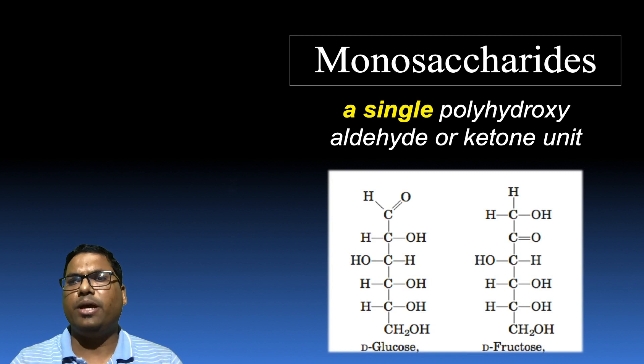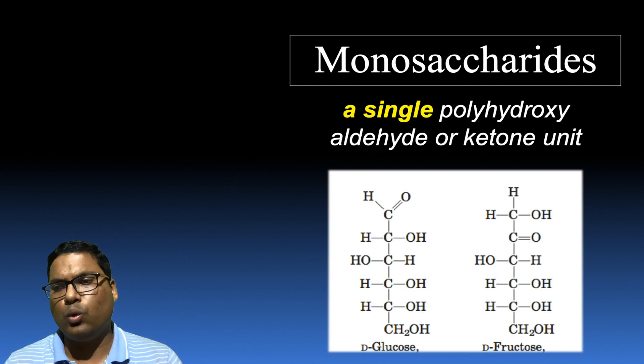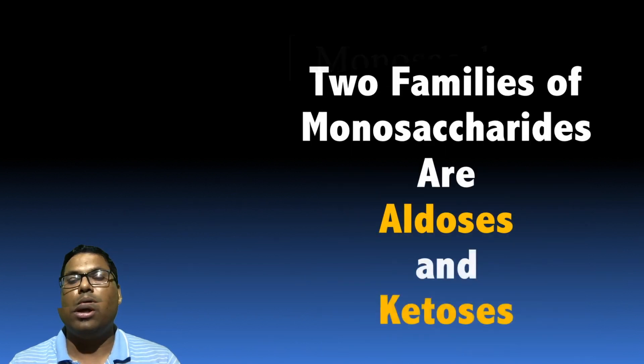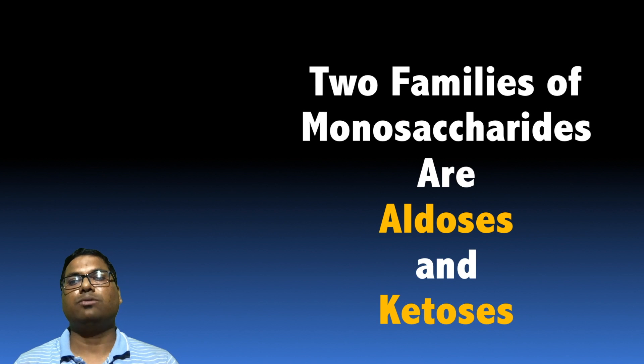Now let us see some of the examples over here, that is glucose, which is being one of the famous monosaccharides, and the other one which we find from the fruits, that is fructose. There are two families of monosaccharide, the first one being called aldoses, while the other one is called ketoses.